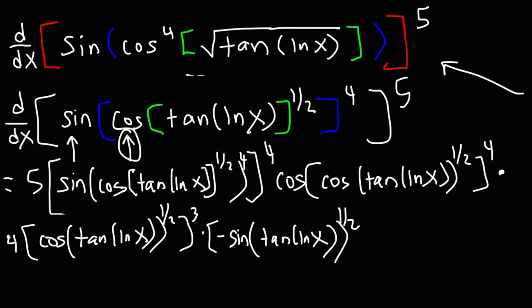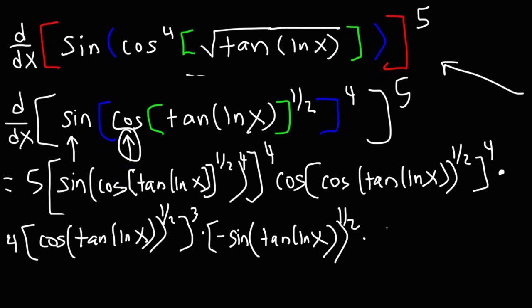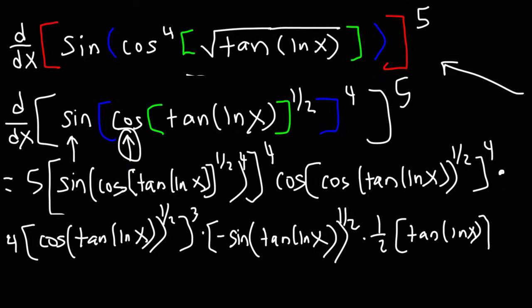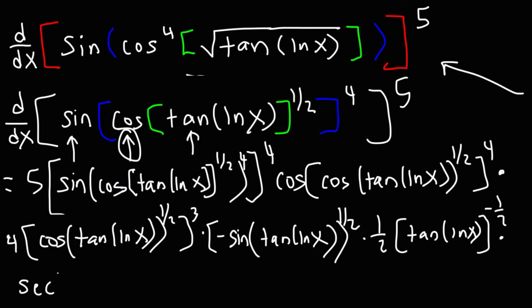Next, we move to the one-half exponent on tangent. Bringing the 1/2 to the front, we keep tangent(ln x) inside and subtract 1 from 1/2 to get negative 1/2. Now working inside, the derivative of tangent is secant squared, and the angle of tangent is ln x.